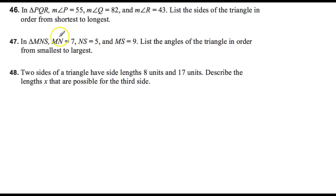Same thing for number 47. You're going to have to draw out triangle MNS. Label your sides. And then you're going to use the converse of what we just did to figure out which angles are the smallest, and then label them from smallest to largest.